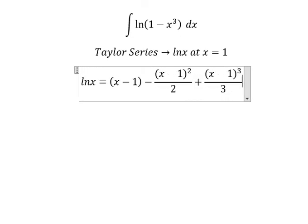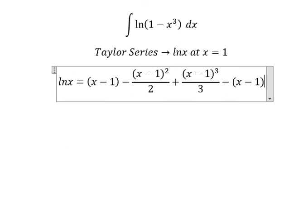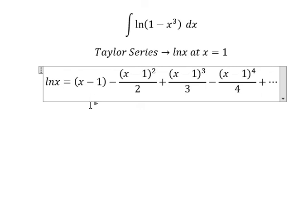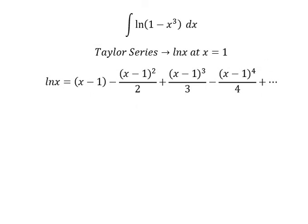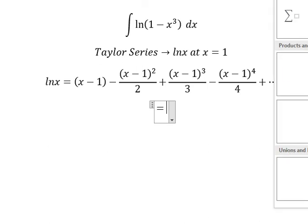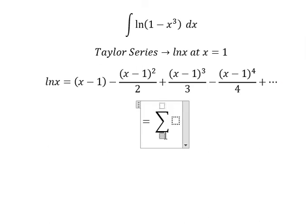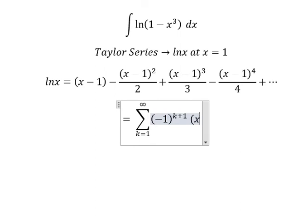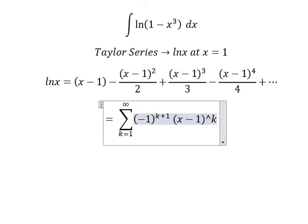So if we simplify this one, we have the summation k equals to one to infinity, so we have negative one to the power of k plus one multiplied with (x minus one) to the power of k over k.